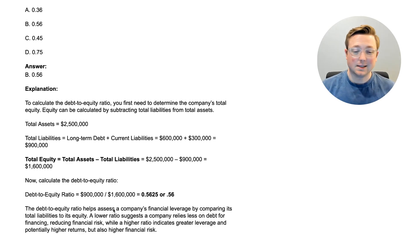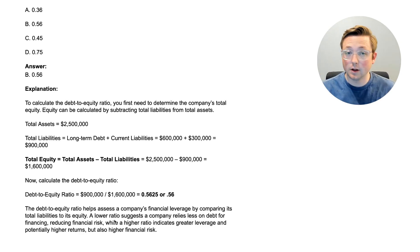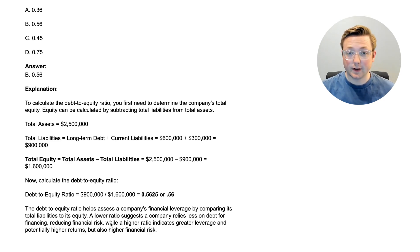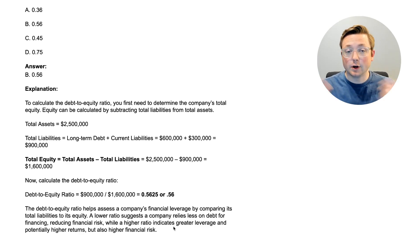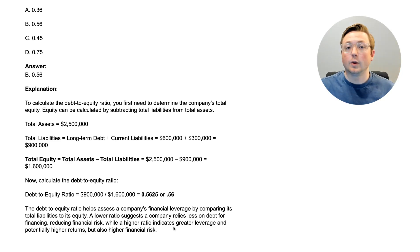Debt-to-equity is trying to measure how leveraged the company is — how are they paying for things, through debt or through equity? With a lower ratio, they rely less on debt for financing, reducing financial risk. A higher ratio indicates greater leverage, meaning potentially higher returns but also higher financial risk. If you don't have all the information, but you have the total assets and either total liabilities or total equity, you can figure out the other part using the accounting equation and then calculate the ratio.